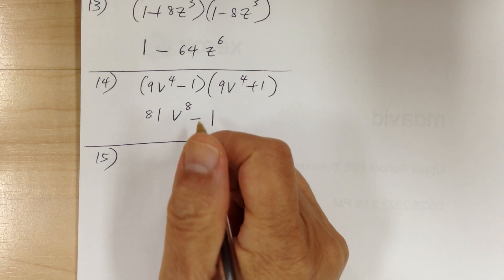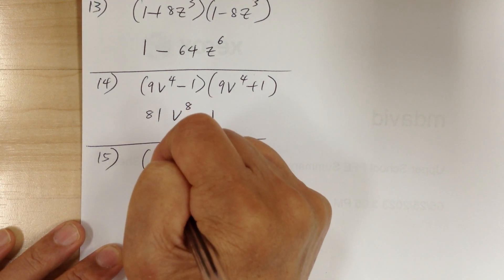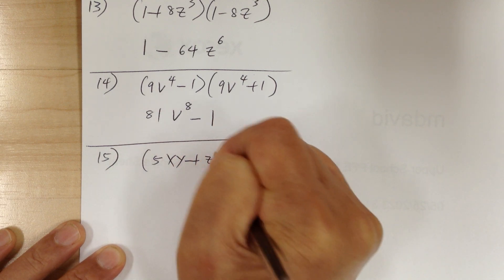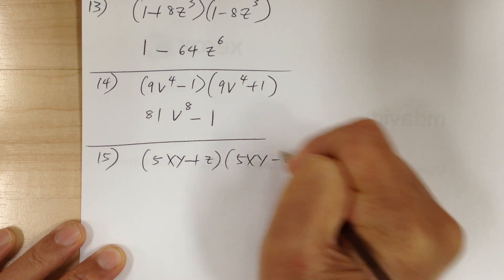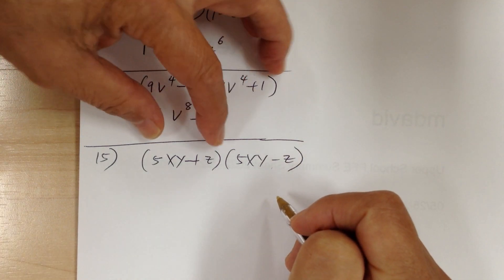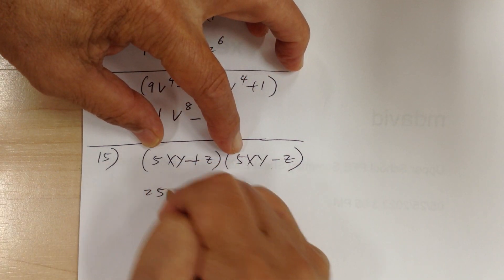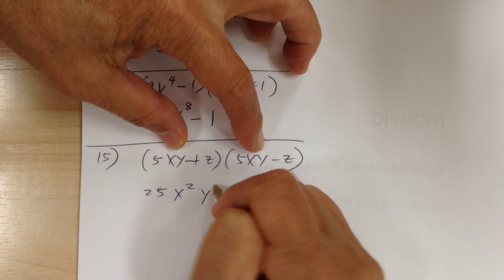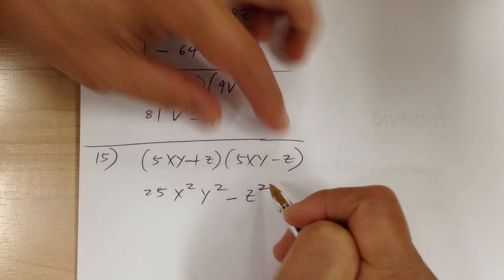Number 15: you have 5xy plus z times 5xy minus z. You can multiply, so it would be 25x squared y squared minus z squared.